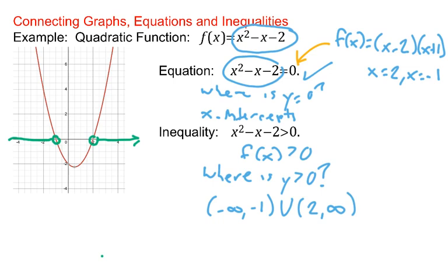If the inequality had been x squared minus x minus 2 is less than 0, the question would be, what are the values of x where the graph falls below the axis? And that would be between negative 1 and 2. So that's kind of interesting.